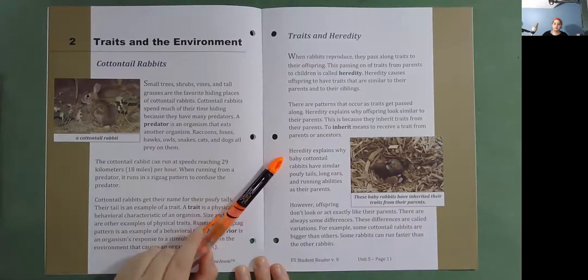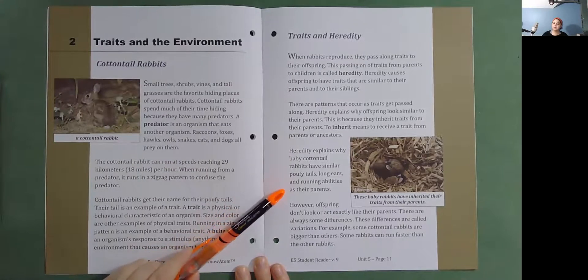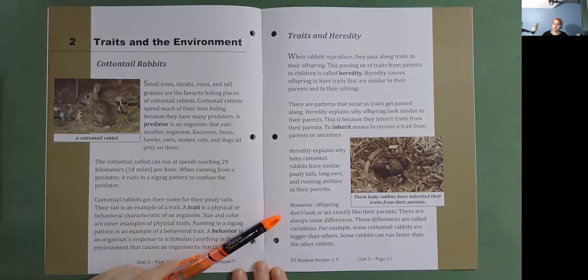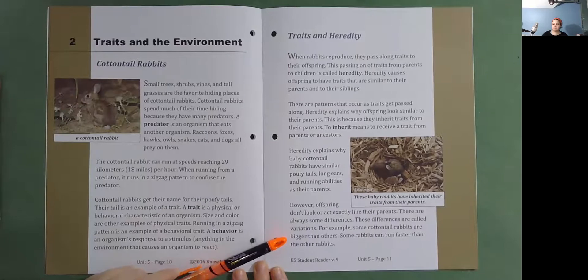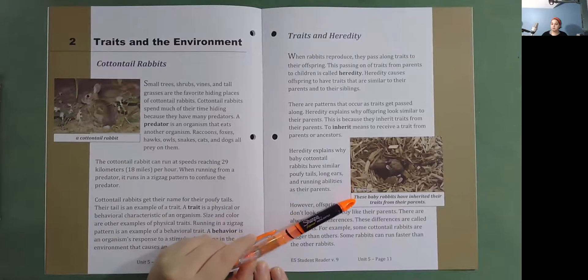Heredity explains why baby cottontail rabbits have similar poofy tails, long ears, and running abilities as their parents. However, offspring don't look or act exactly like their parents. There are always some differences. These differences are called variations. For example, some cottontail rabbits are bigger than others. Some rabbits can run faster than the other rabbits. These baby rabbits have inherited their traits from their parents.